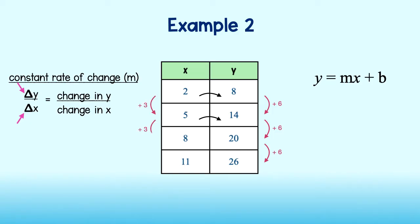It increases by 6 each time. The x values increase by 3 each time. So my constant rate of change is the change in y, or 6, over the change in x, or 3. This reduces to 2. I can plug 2 in for the slope into my equation.